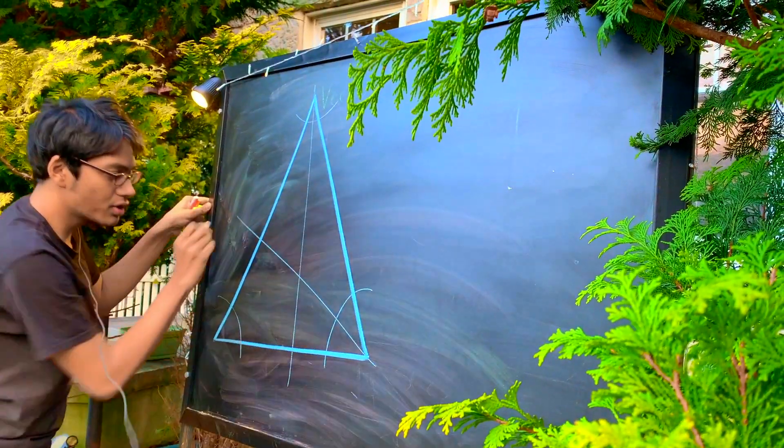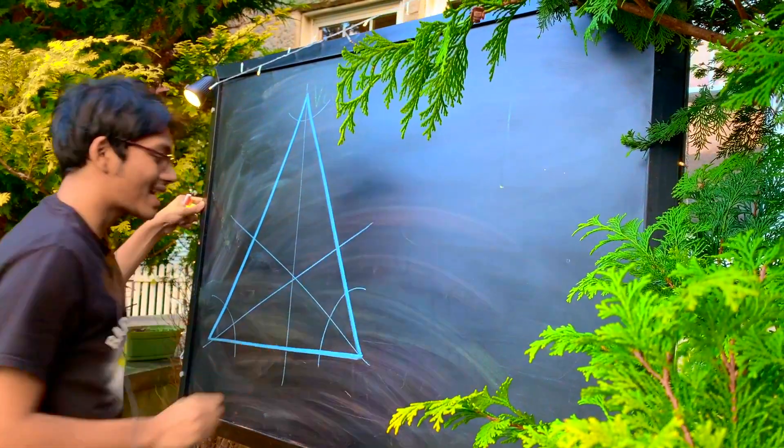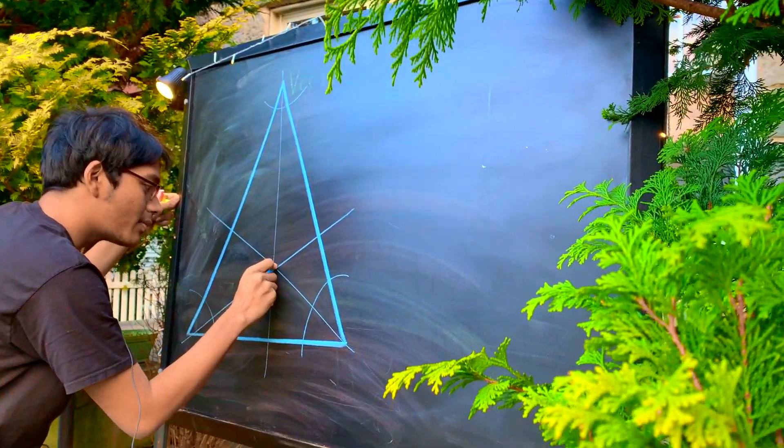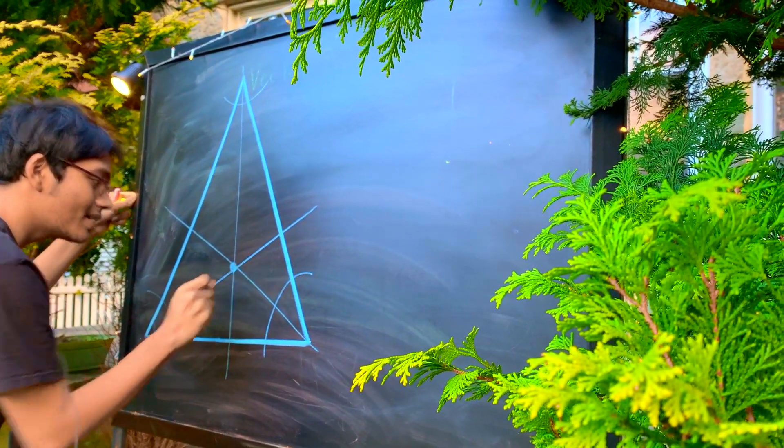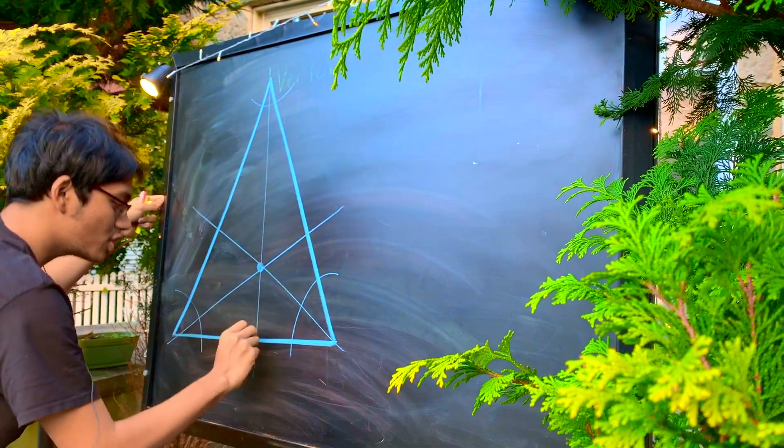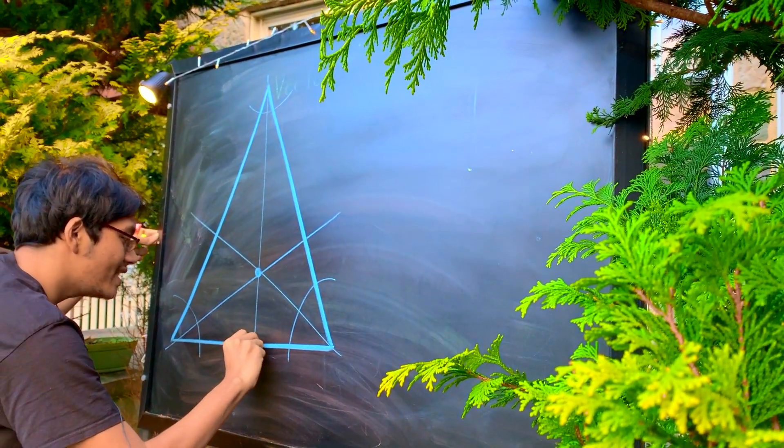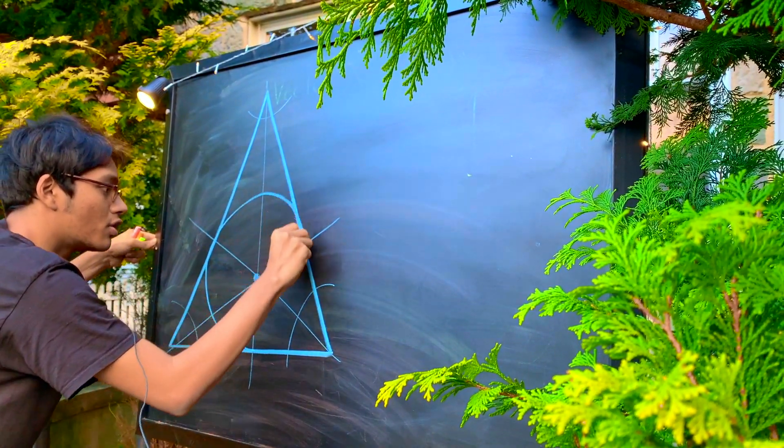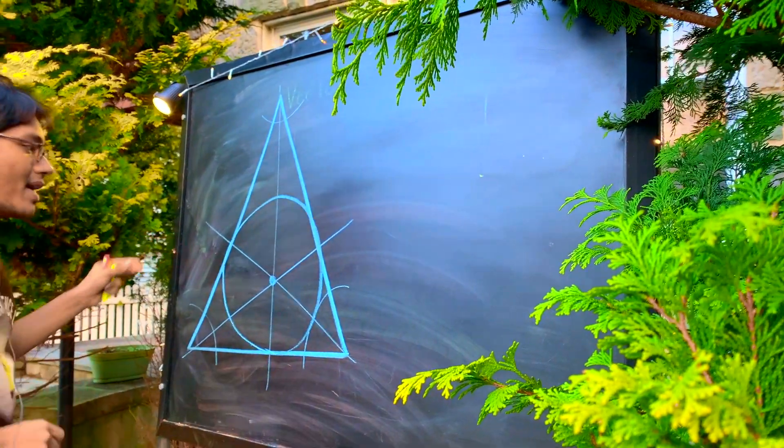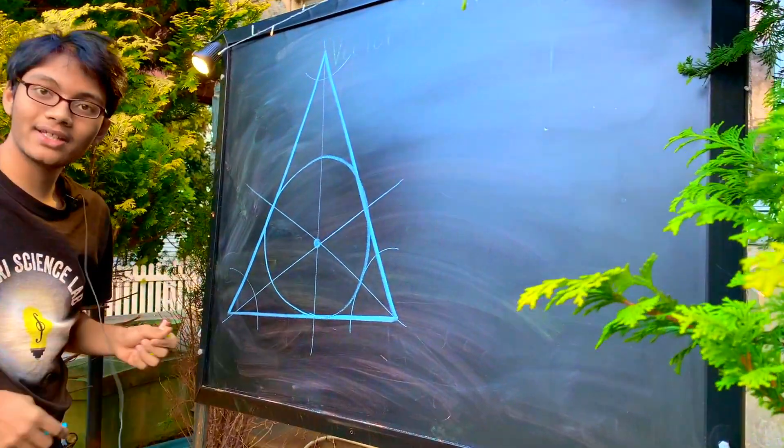I bisect all three of my angles and I'm going to end up at a common point where all of these angle bisectors meet up. That's the in-center. And that's going to serve as the center for the inscribed circle around my triangle. So here's my inscribed circle.